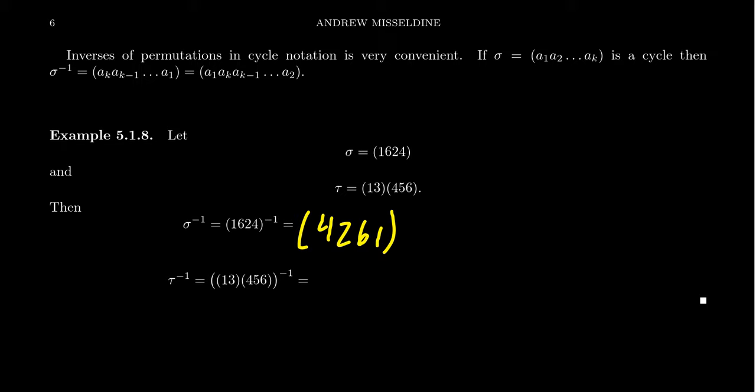The idea is you just have to reverse the process. That's what inversion does here. If 1 goes to 6, then we want 6 to go to 1. If 6 goes to 2, then we want 2 to go to 6. If 2 goes to 4, then we want 4 to go to 2. And if 4 goes to 1, then we want 1 to go to 4. So we reverse the process.